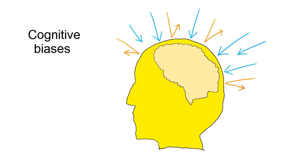Although we may be inclined to see biases as limitations, we could also view them as cognitive shortcuts, since they speed up information processing.